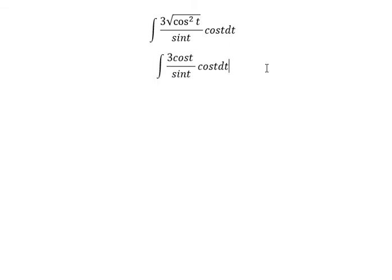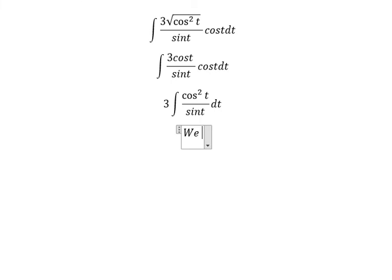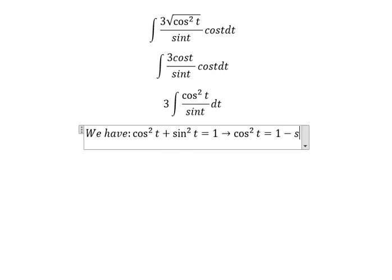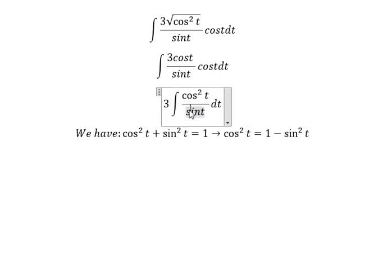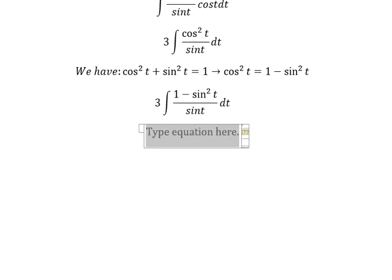Now we get 3 multiplied with the integral of cos²(t) over sin(t) dt. We use the identity cos²(t) equal to 1 minus sin²(t) and substitute it in here. So we get 3 multiplied with 1 over sin(t).